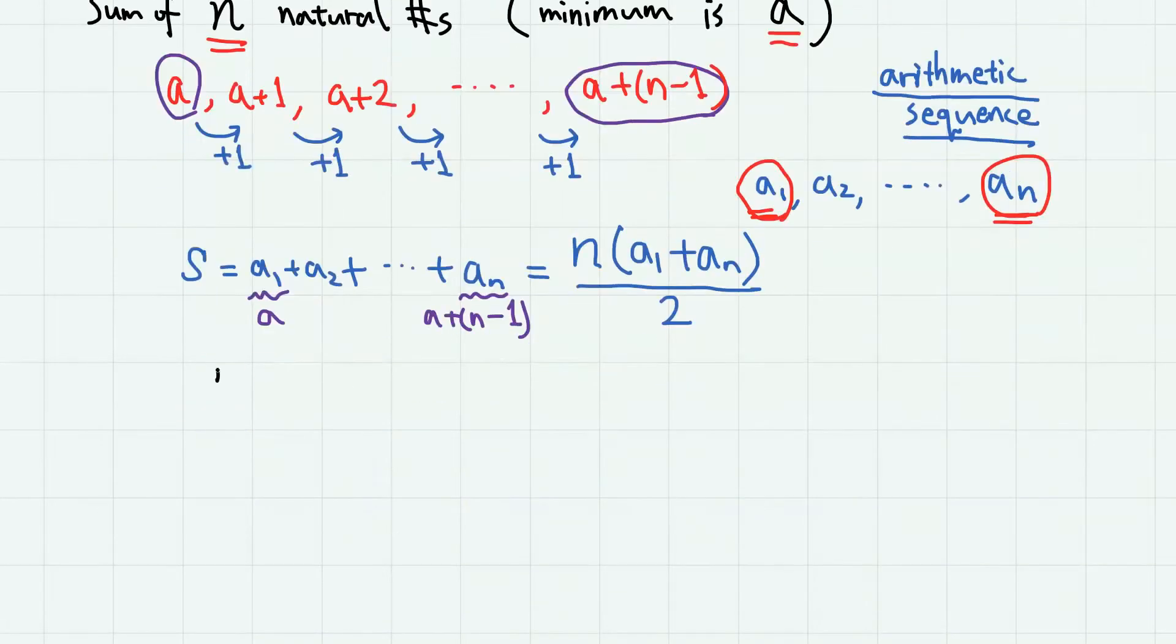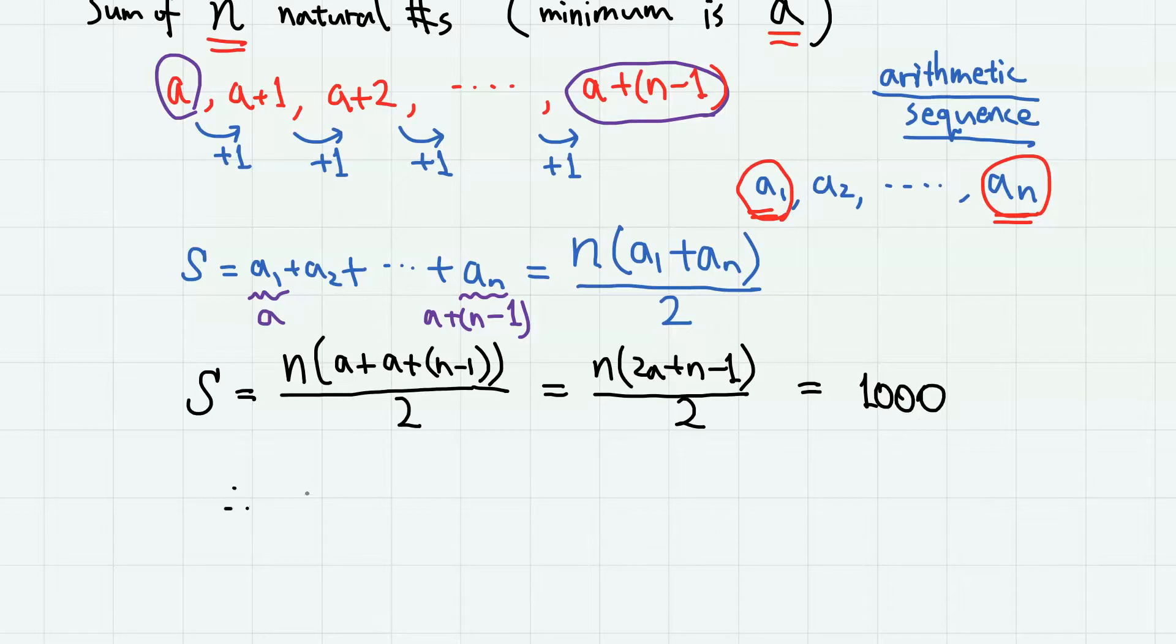Therefore, we have s equals n times a plus a plus n minus 1, over 2, which is n times 2a plus n minus 1, over 2. And this must be 1000. And therefore, n times 2a plus n minus 1 equals 2000. And if we factor 2000 into prime numbers, we have 2 to the power of 4 times 5 to the power of 3.